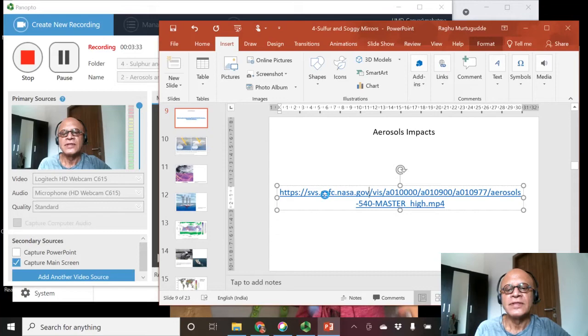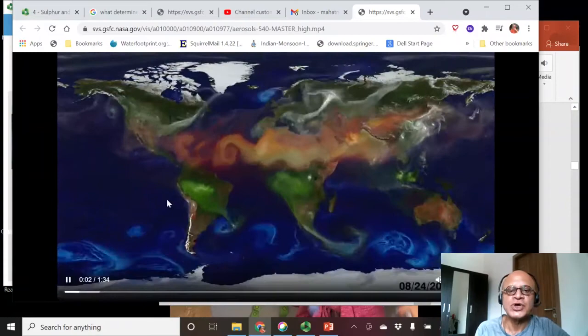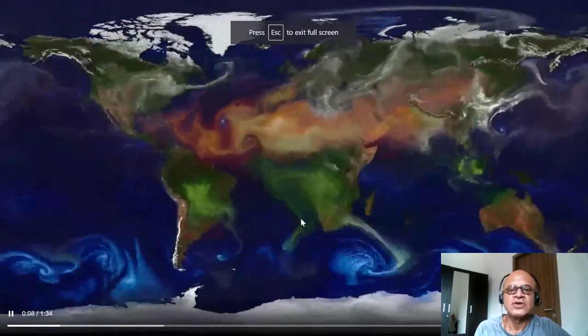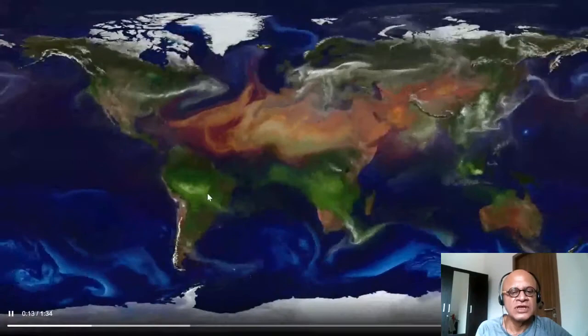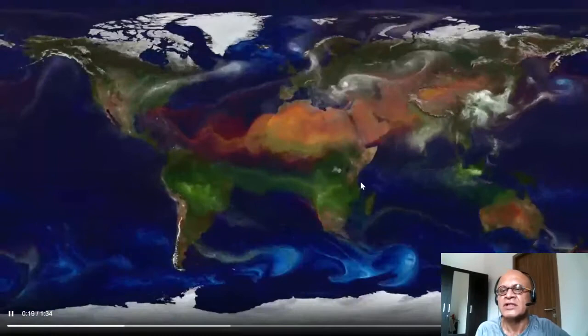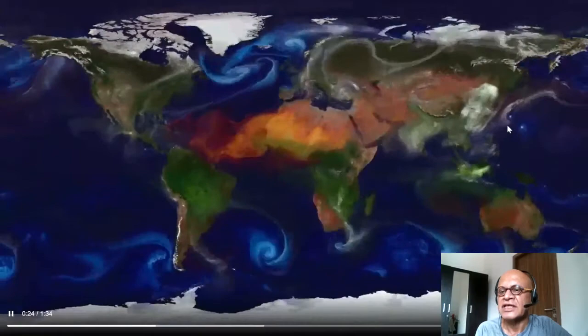This is showing aerosols. I can put it on full screen. It's showing dust from Sahara, sea salt, clouds, forest fires, some volcano somewhere as well. There was a typhoon going by here. As you can see, there are cyclone activities floating around.